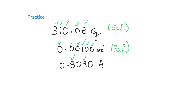For 0.8090: the 8 and the 9 definitely count. There are three different kinds of zeros here. The zero between 8 and 9 is captive, so it is counted. The zero at the very front is a leading zero and is never counted. The zero at the end is a trailing zero, and because there is a decimal point in the number, we count it. That gives us four significant figures.